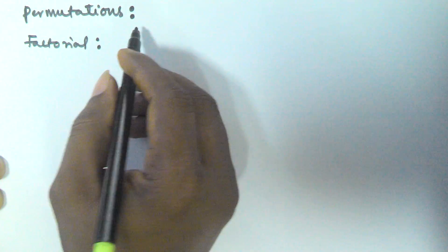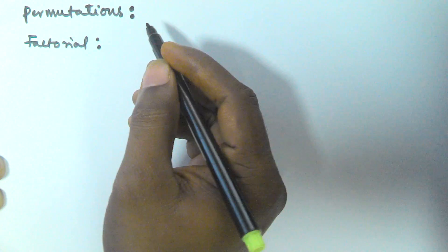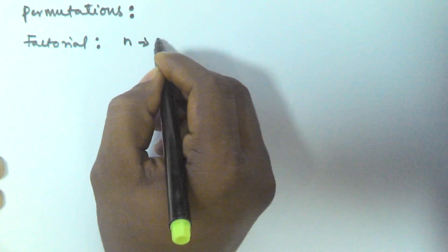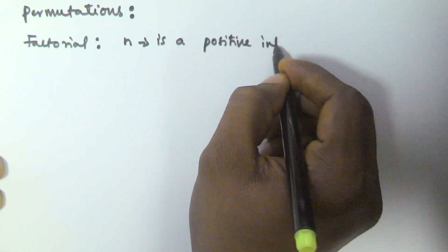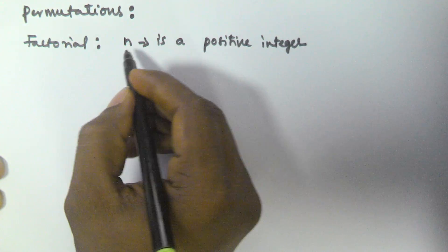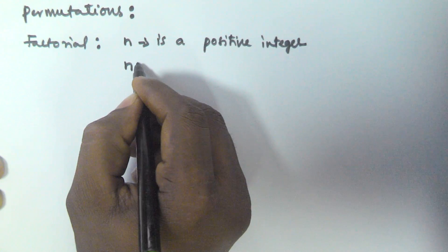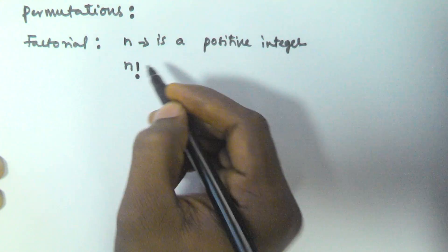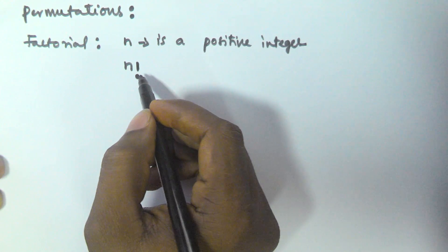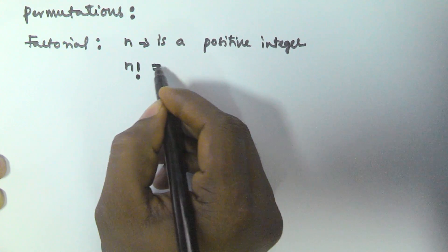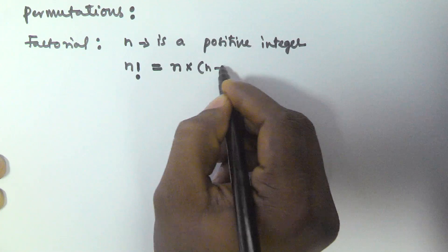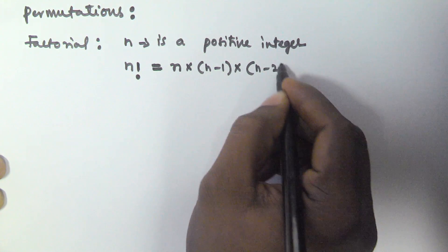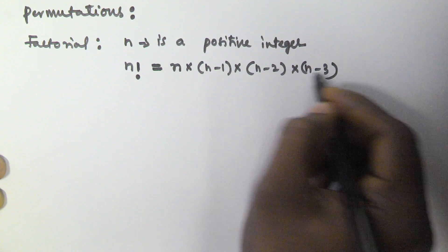Factorial is simply the multiplication of numbers. So if n is a positive integer, the factorial of n is represented as n! (n factorial). The value of n factorial is n into n minus 1, multiplied by n minus 2, multiplied by n minus 3, and so on till 1.